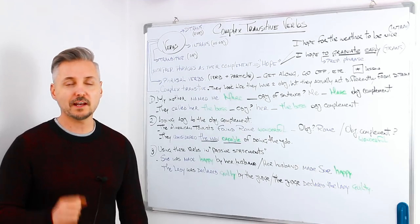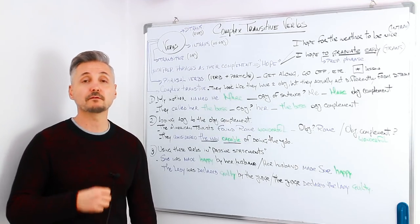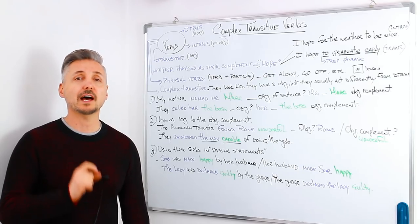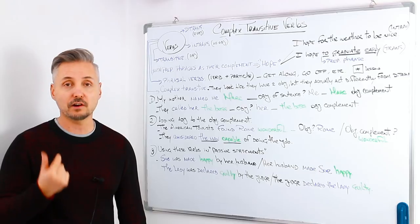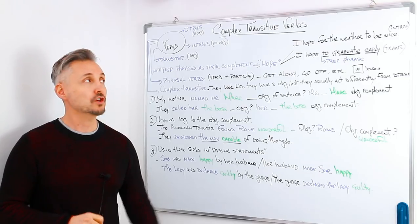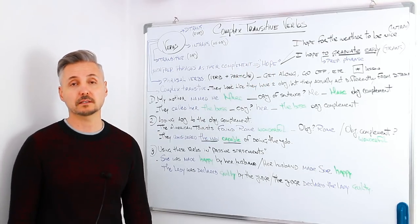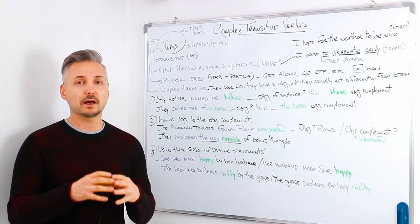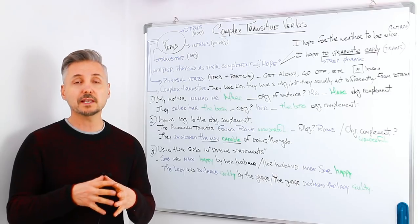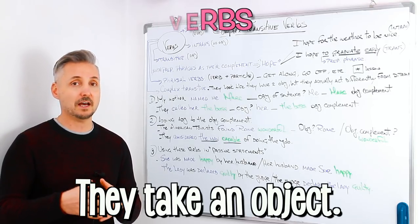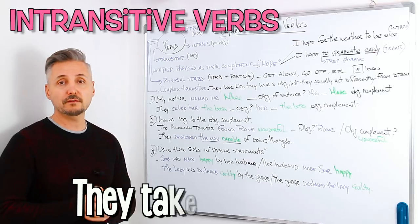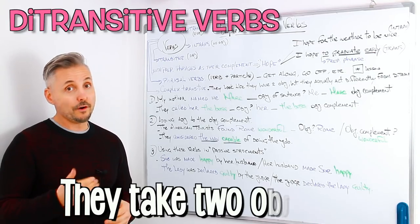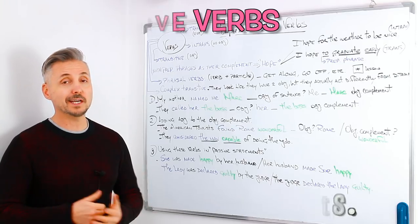Let me tell you first that I've already talked about verbs in various occasions. If you don't understand what an indirect or a direct object is, you may click here to watch all those lessons. However, I'm going to review more or less what verbs can be. Verbs can be transitive, so they take an object. Intransitive, they take no object. Ditransitive — they take two objects.